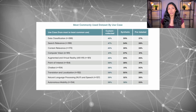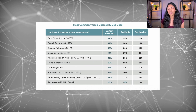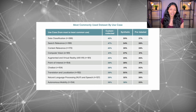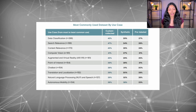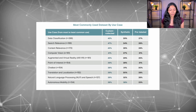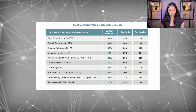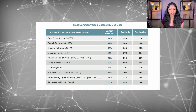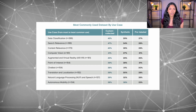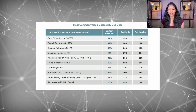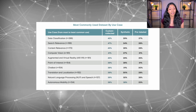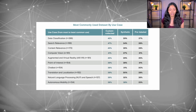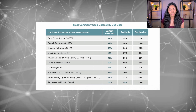Did you know that the most common use case for machine learning is actually for data classification? According to this study conducted by Appen, by looking at this table you can see that out of all the research that they have done the most common use case of ML was actually for data classification, followed by search relevance and content relevance, and then computer vision.